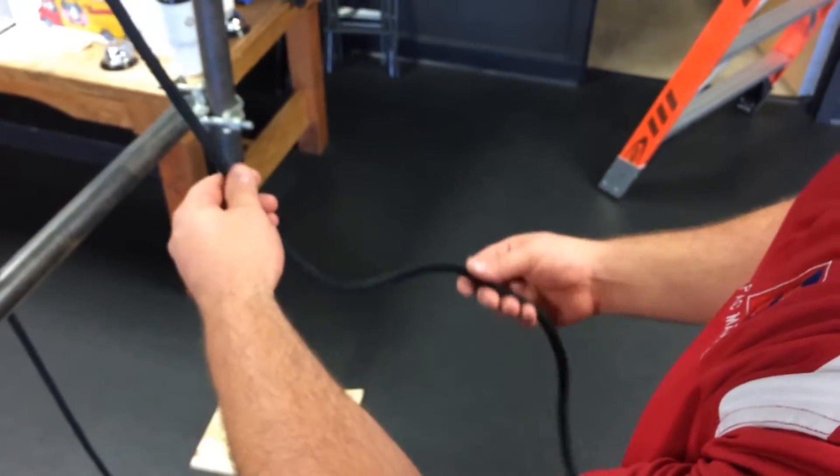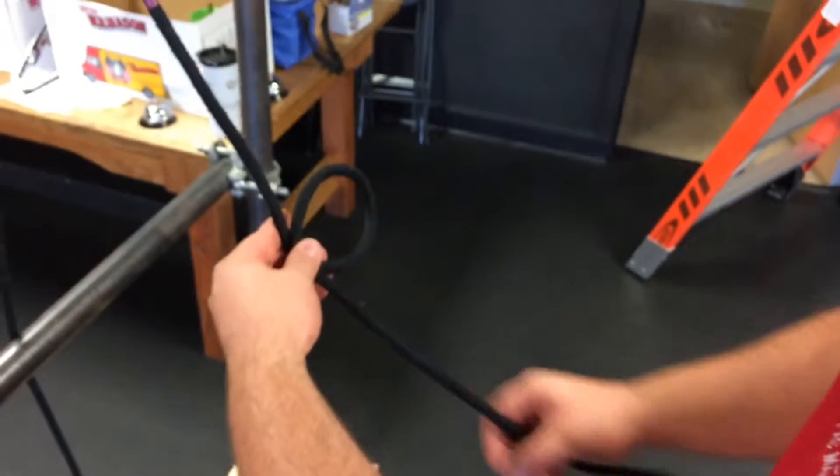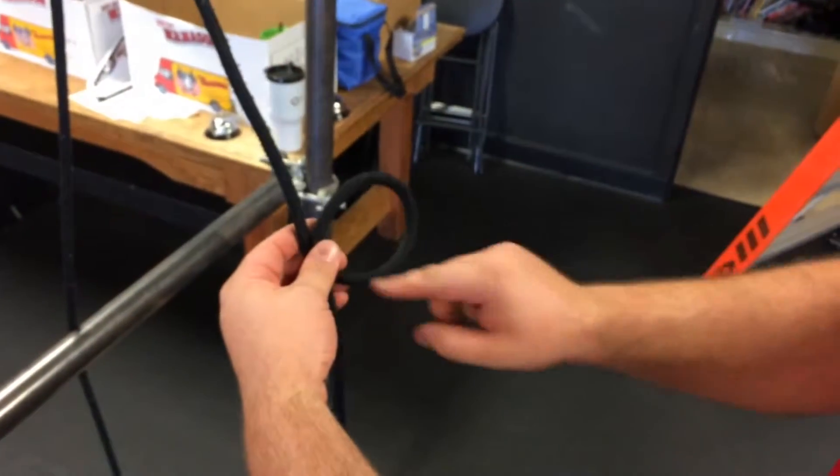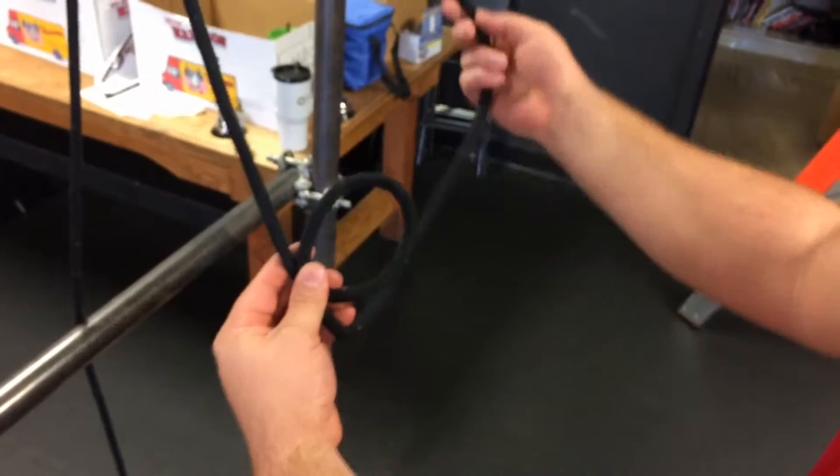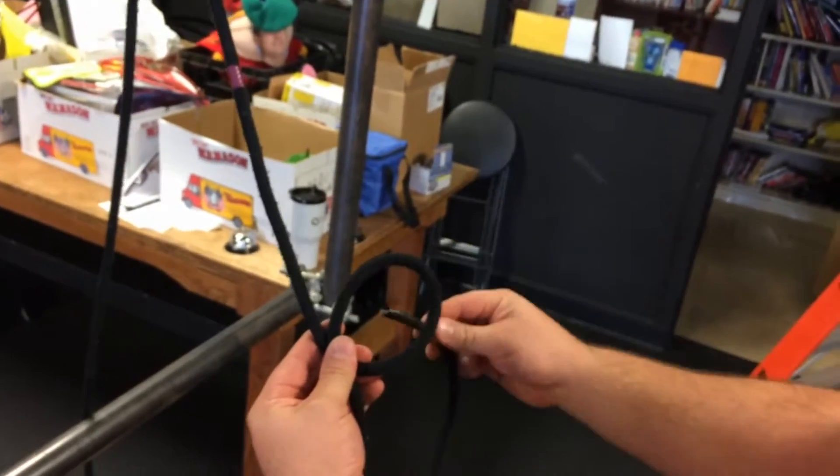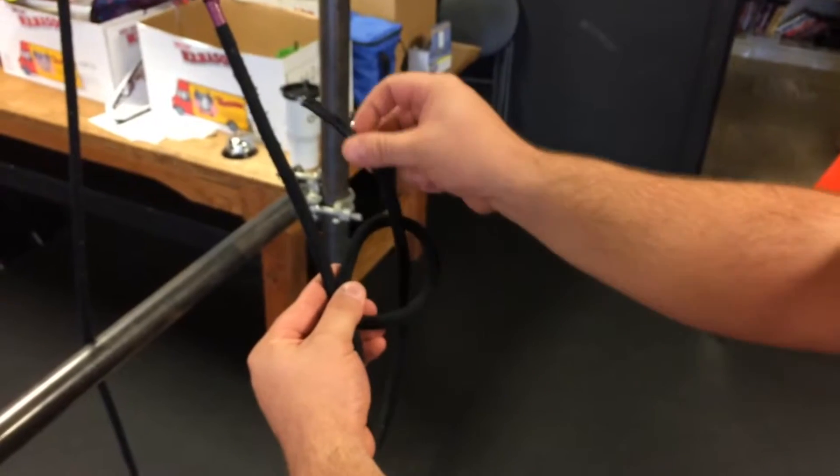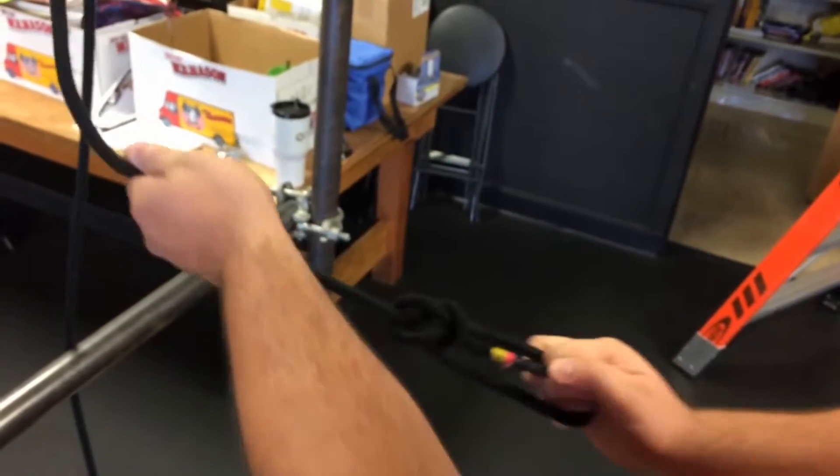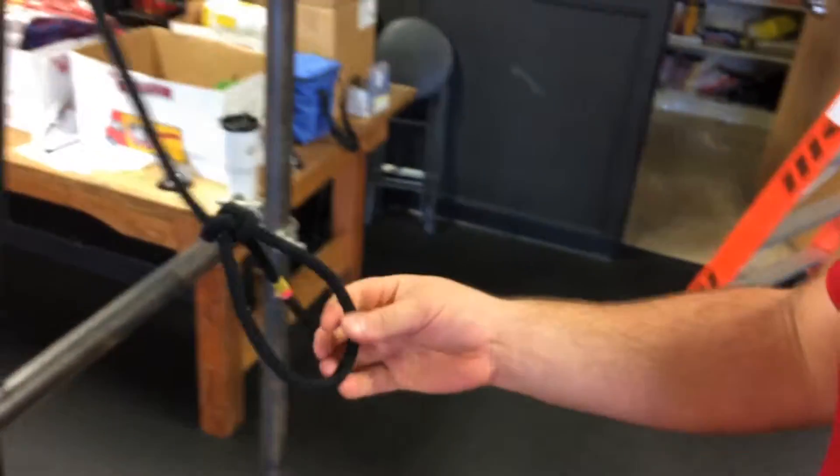We're going to make our bowline knot. Imagine the rope is the trunk of a tree, and we put a hole at the bottom of the tree. The other end of your rope is the rabbit. It comes out of the hole, around the tree, back in the hole. Pull it through. There's your bowline.